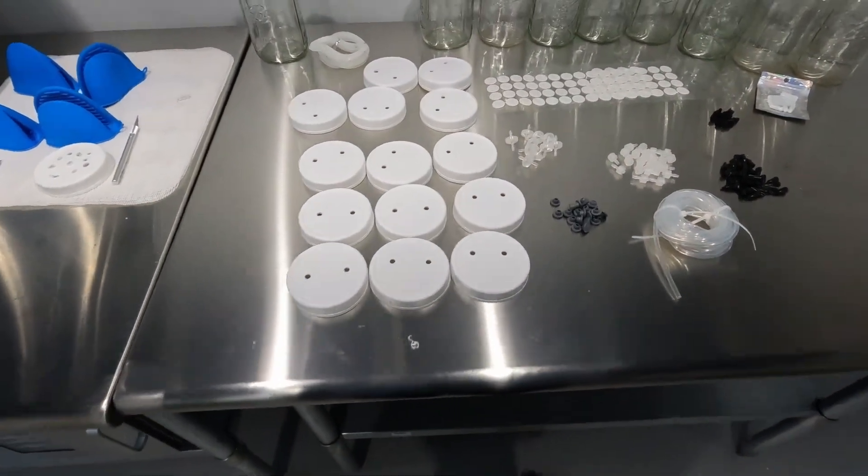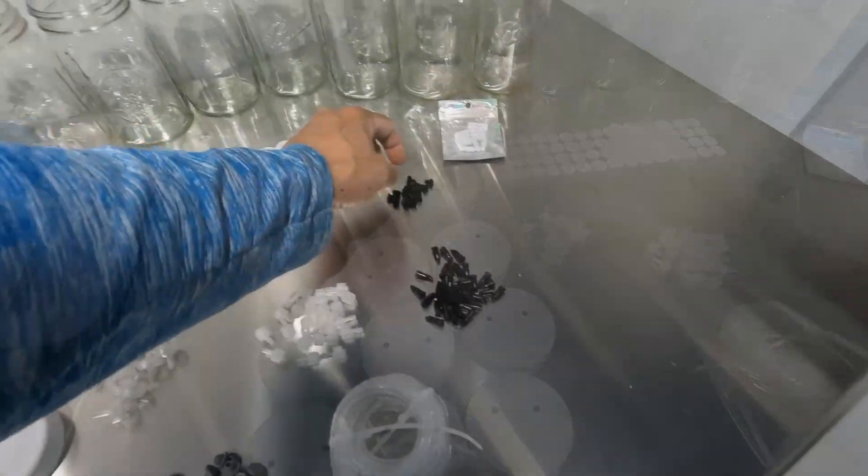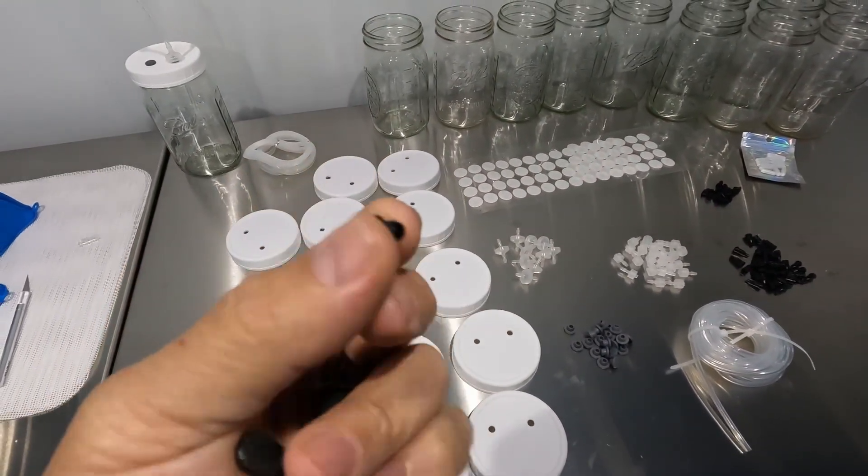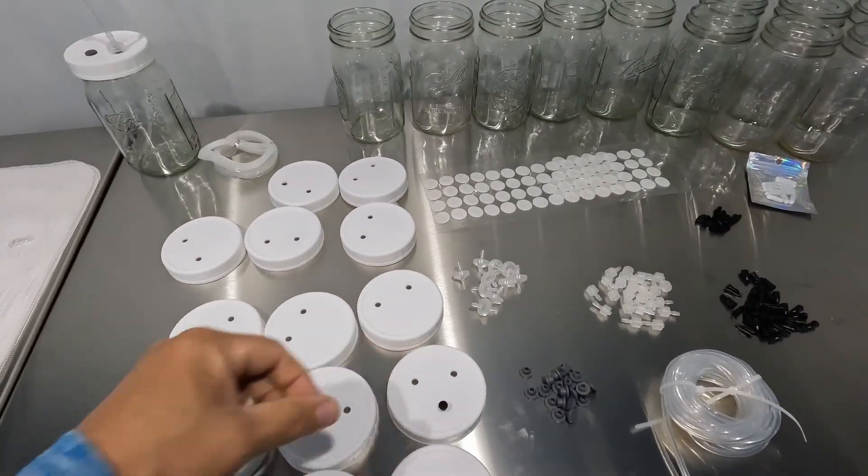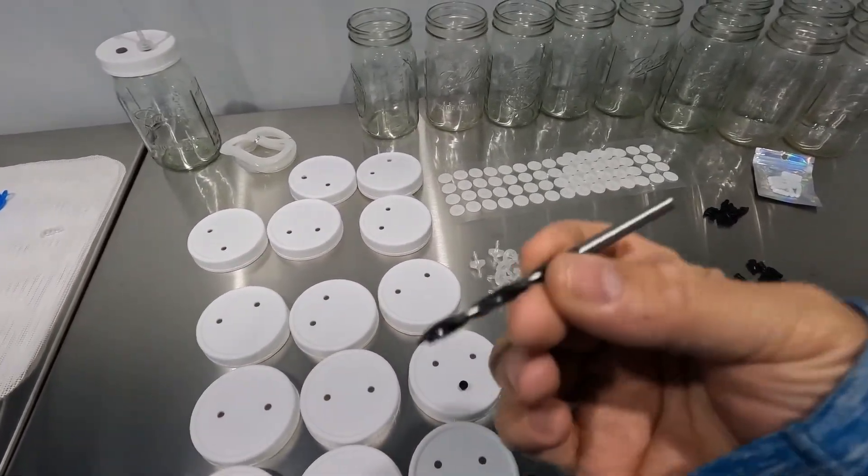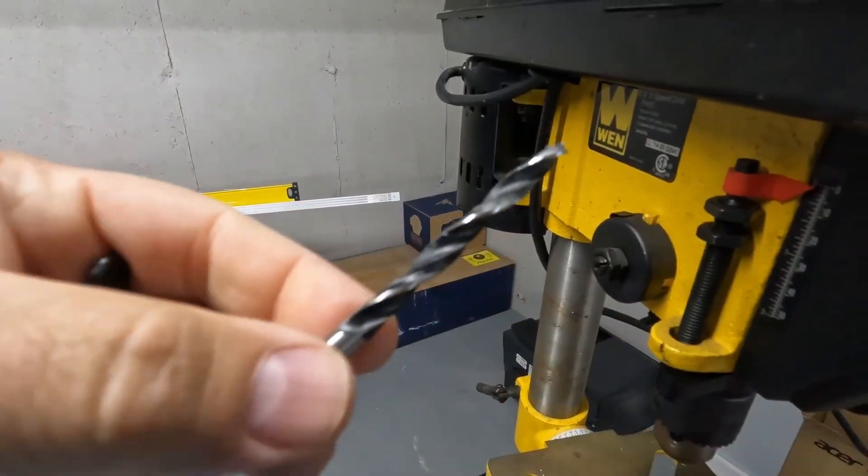With them all completed with the bigger holes, now we have to change our drill bit. We're going to do the one for the grommets that are used for the little valve we're going to put in.